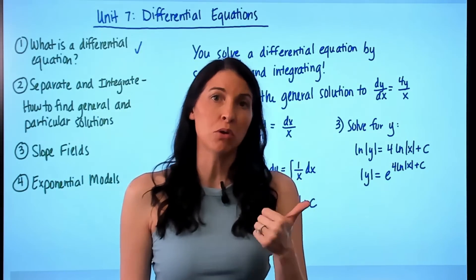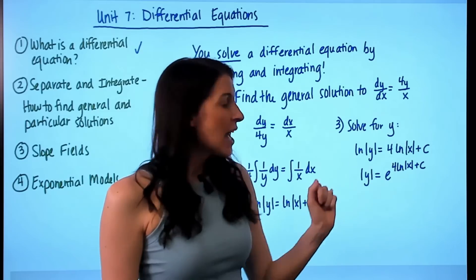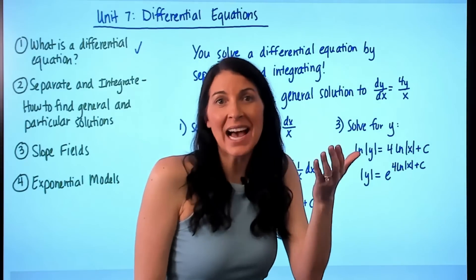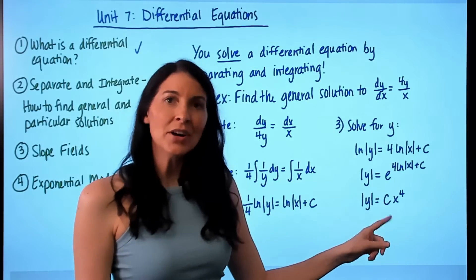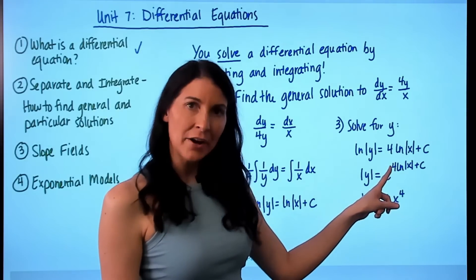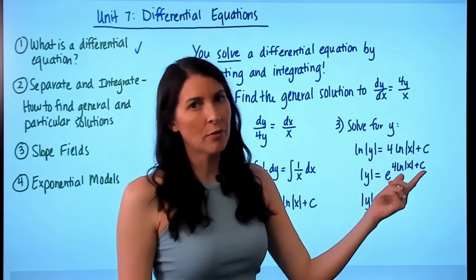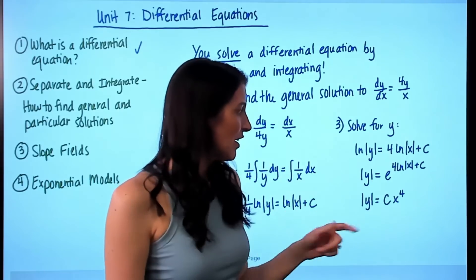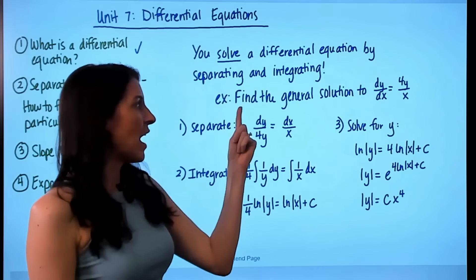The simplifying required understanding both log and exponential properties. With exponential properties, a sum in the exponent means e to the four·ln(x) times e to the C. Since e to a constant is just a constant, I brought a constant out in front. Using the logarithm power rule, the constant multiplier in front of the log becomes the exponent, giving e to the ln(x⁴). Since x⁴ is positive I dropped the absolute value, and e to the ln of something cancels, giving C·x⁴. I have now solved for y and found the general solution.